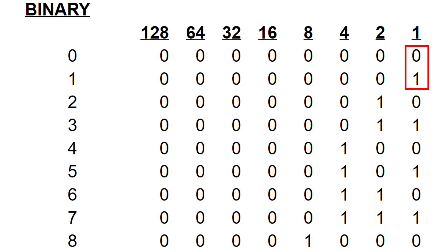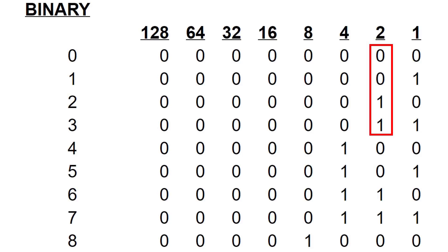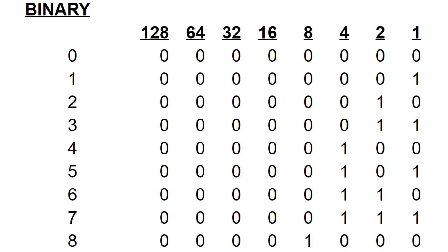It's also worth noting there are patterns on the vertical as well. In the ones column you get zero, one, zero, one repeating. In the two column, you get zero, zero, one, one, zero, zero, one, one repeating. In the four column, you get zero, zero, zero, zero, one, one, one, one repeating. And it goes on forming a pattern exactly like that.